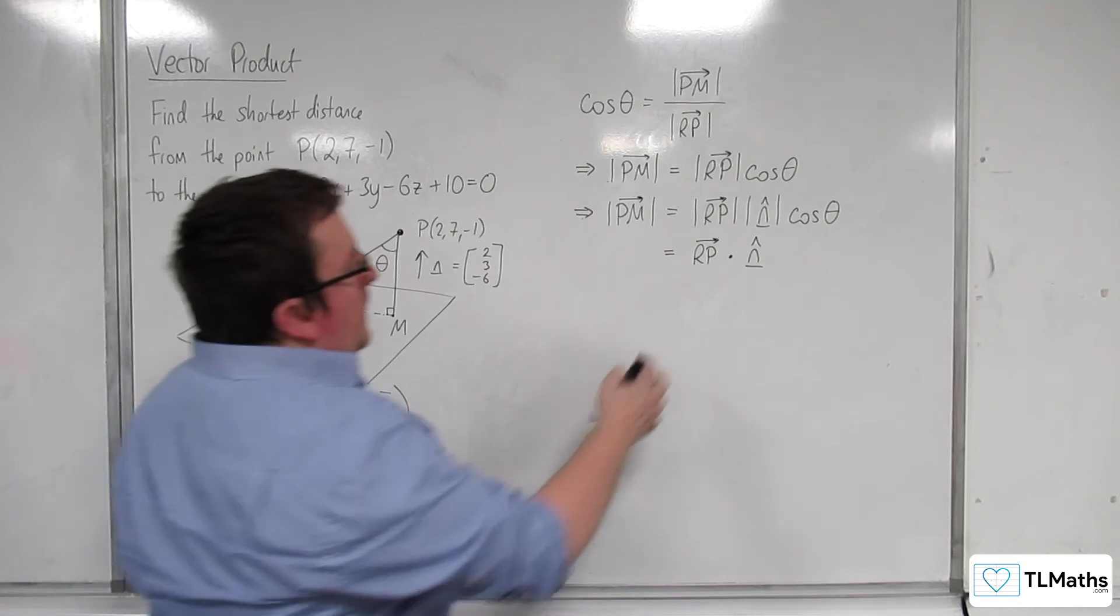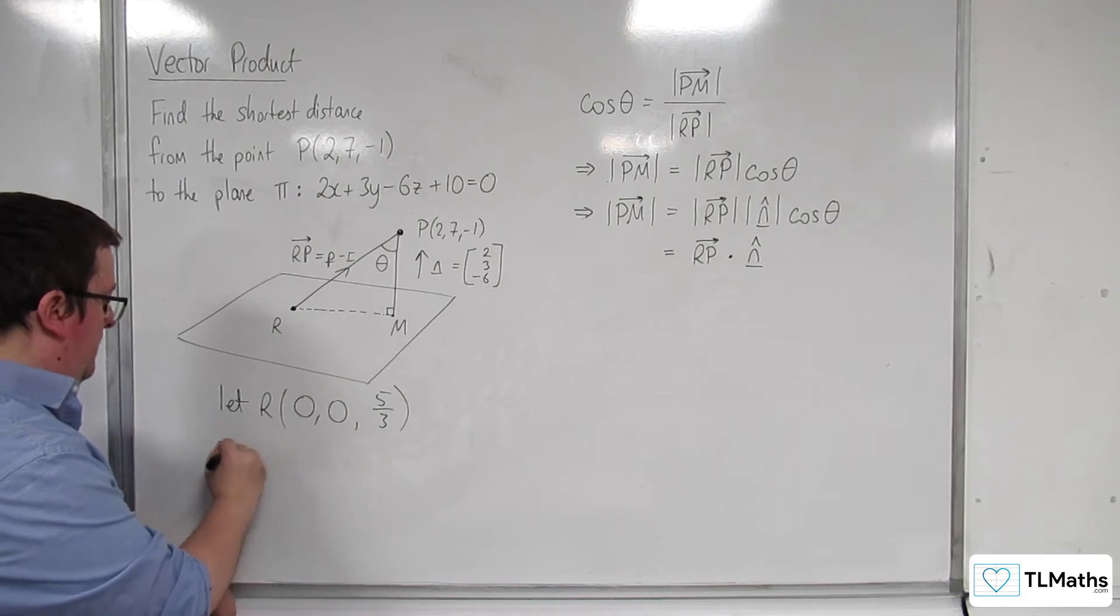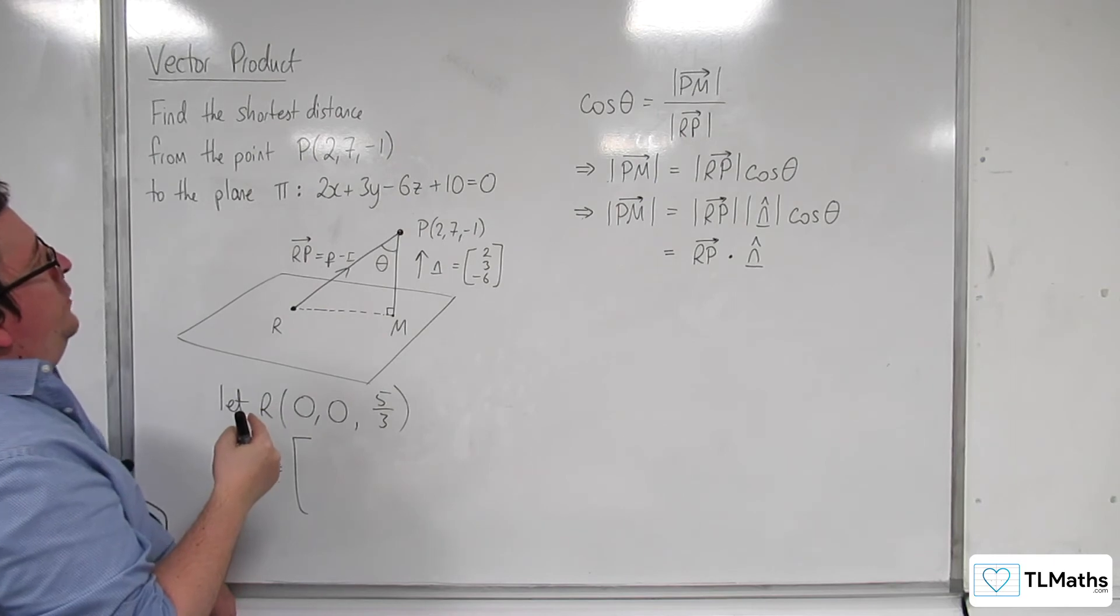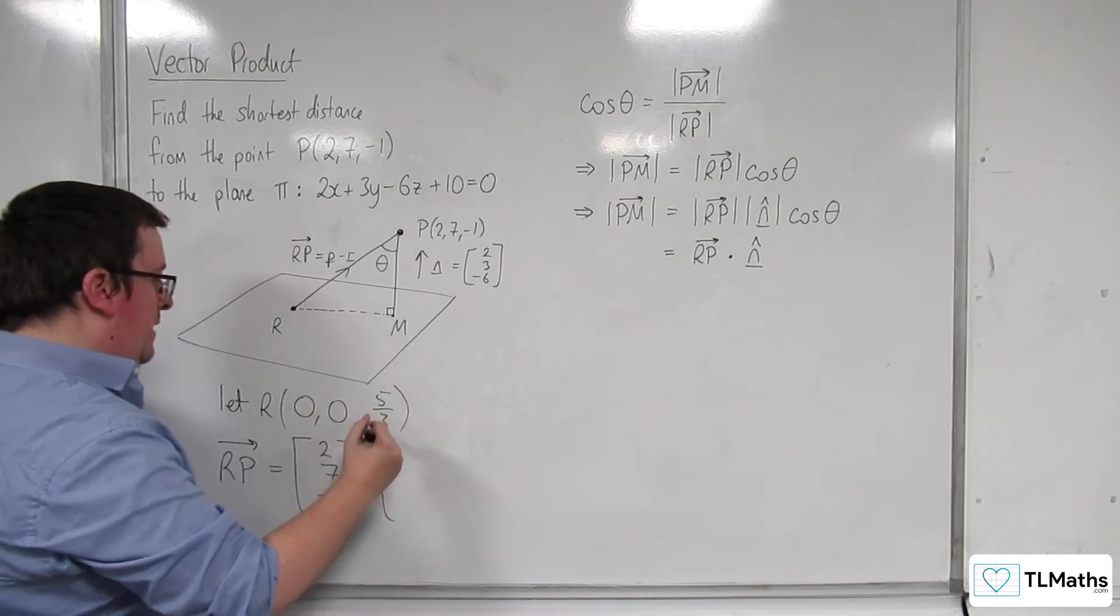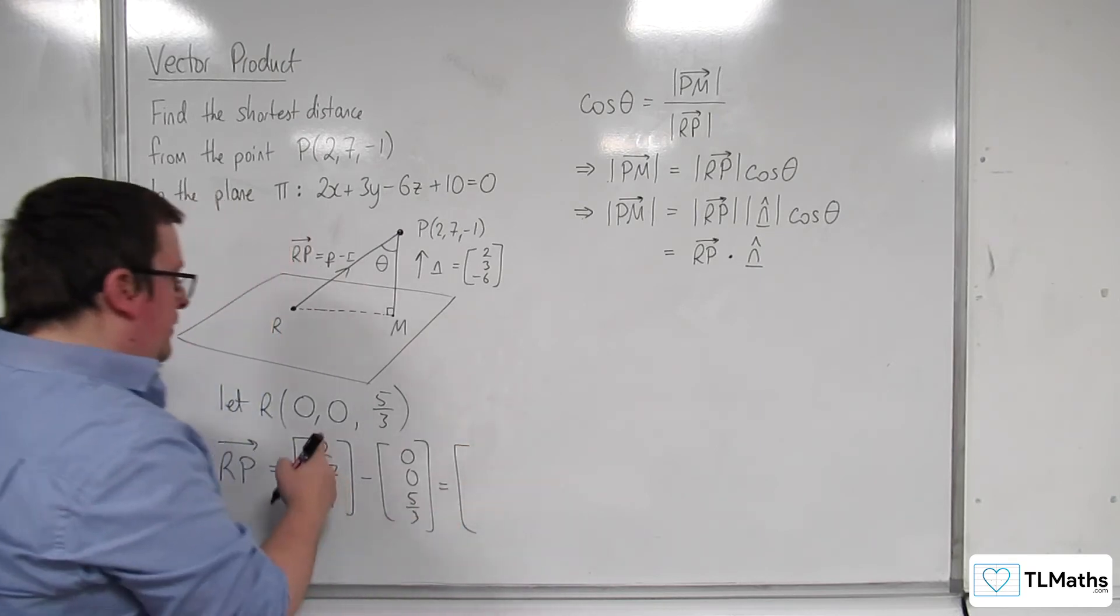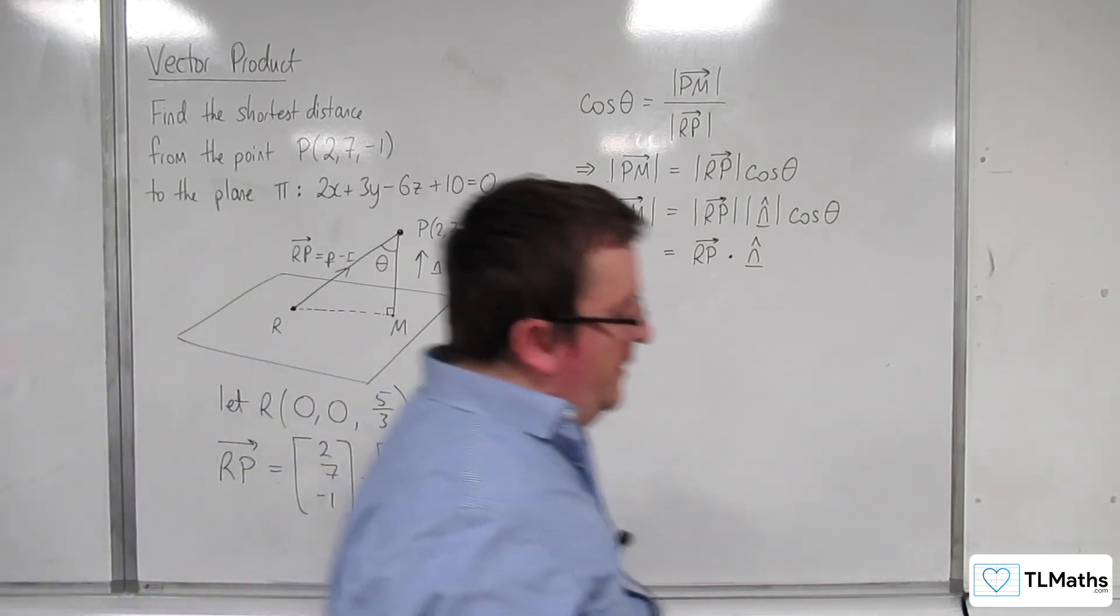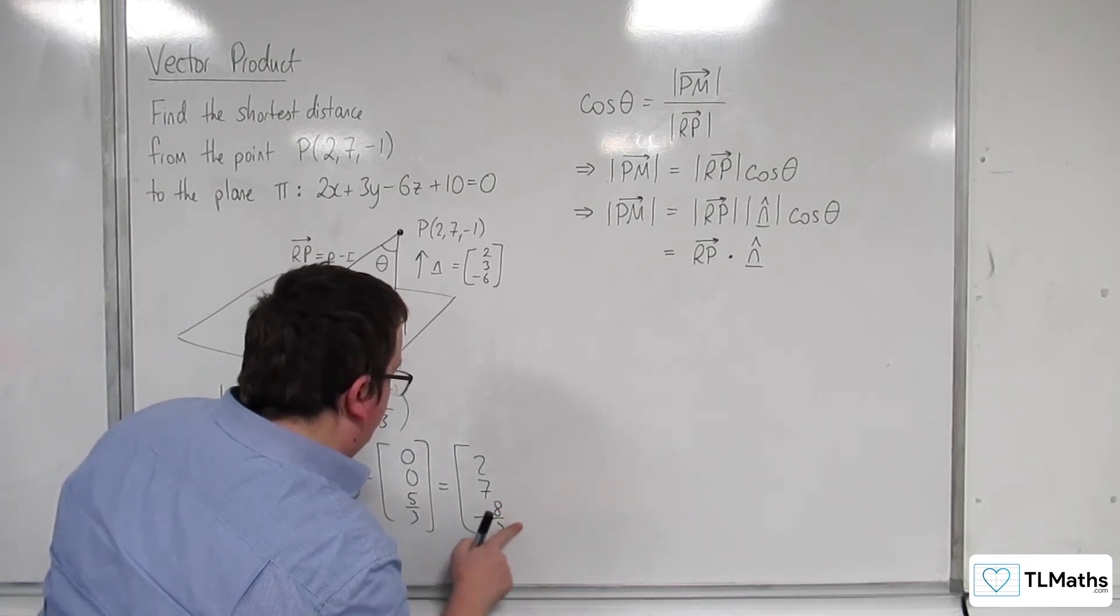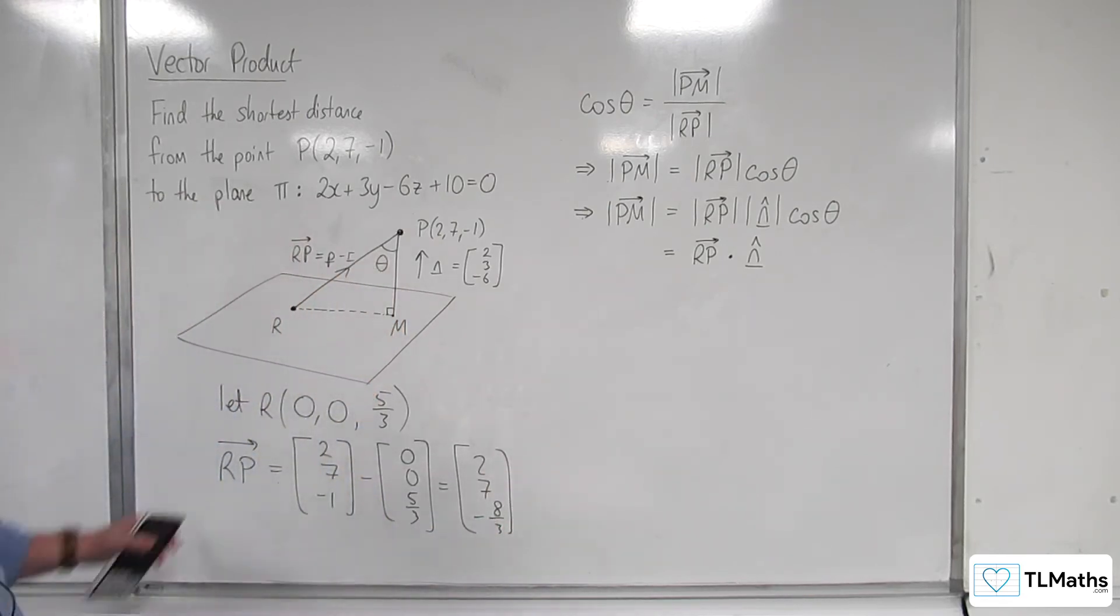So I can work out RP. RP is P minus R. So P is (2, 7, -1) takeaway R which is (0, 0, 5/3). 2 takeaway 0 is 2, 7 takeaway 0 is 7, minus 1 takeaway 5 thirds is minus 8 thirds. So that's RP.